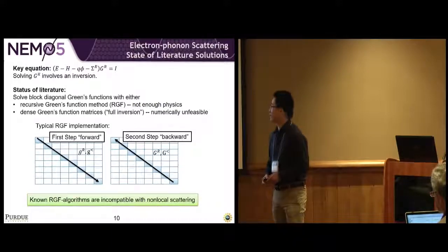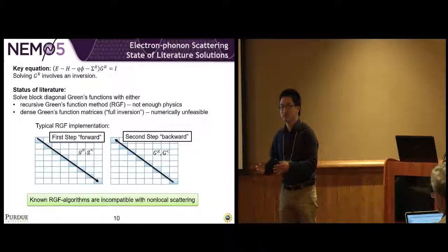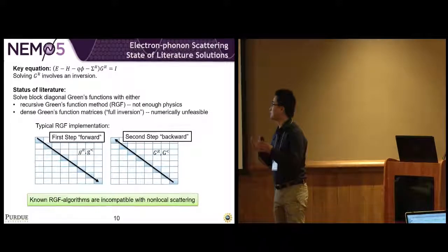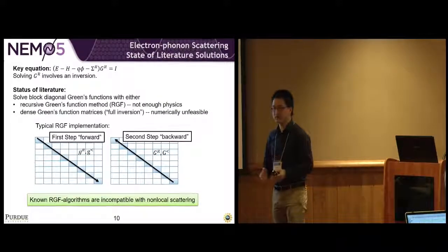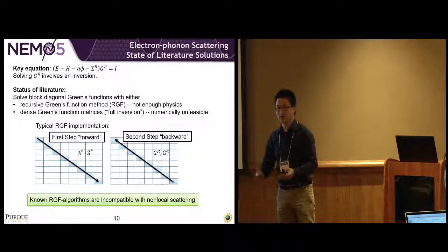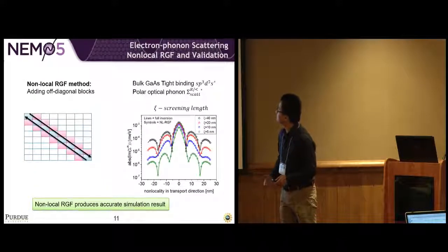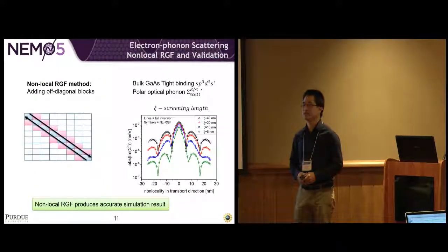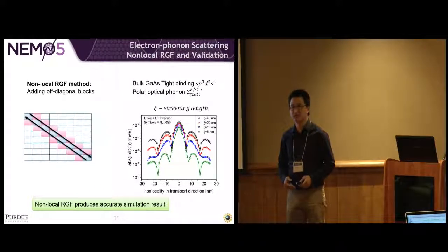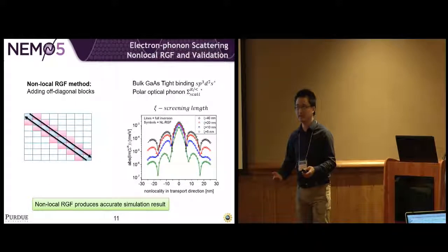They all have their own drawbacks. For the RGF method, it only uses diagonal blocks, ignoring the off-diagonal blocks, but there's physics information contained in the off-diagonal blocks. For the dense inversion, it's numerically expensive and sometimes unfeasible. So we developed a non-local RGF method that adds the off-diagonal blocks to the RGF simulation, so we can include more physics.